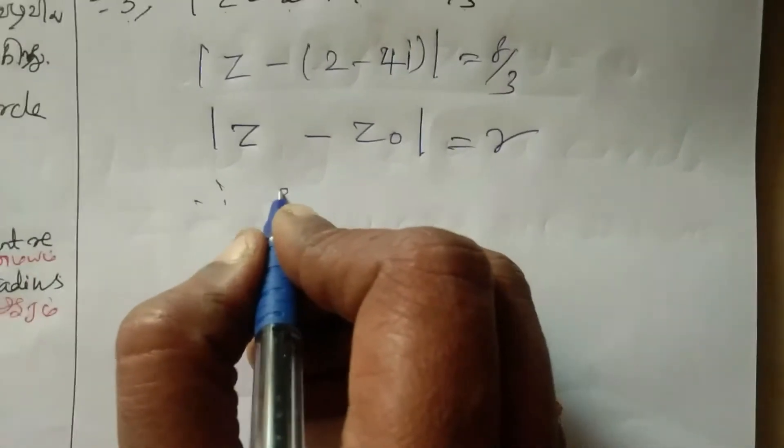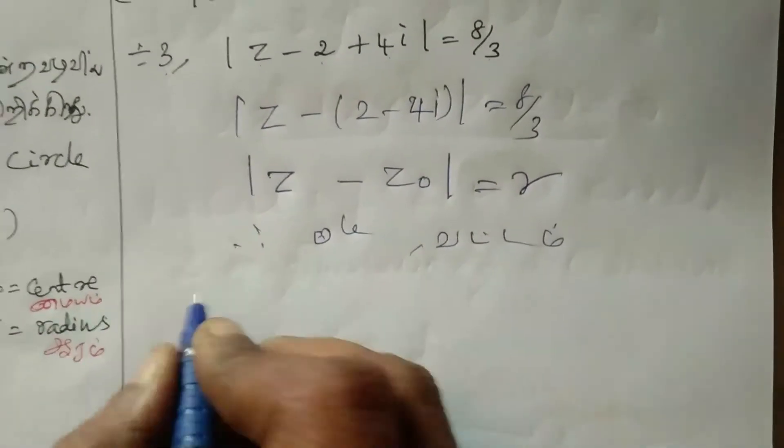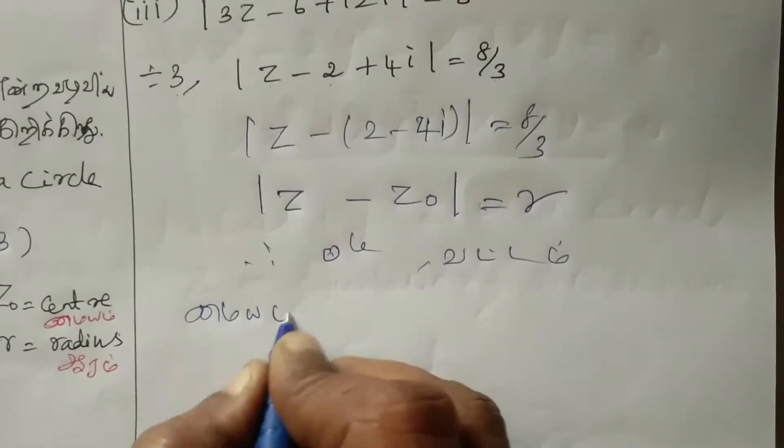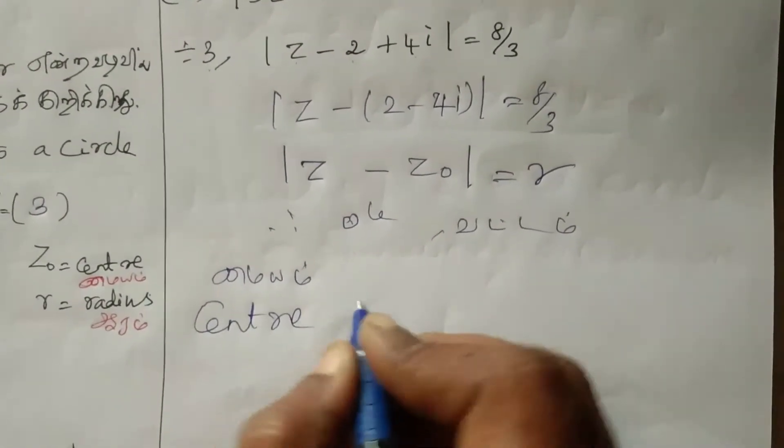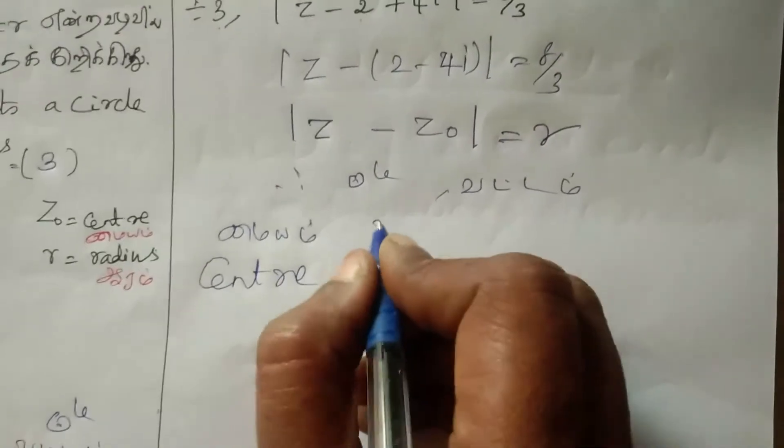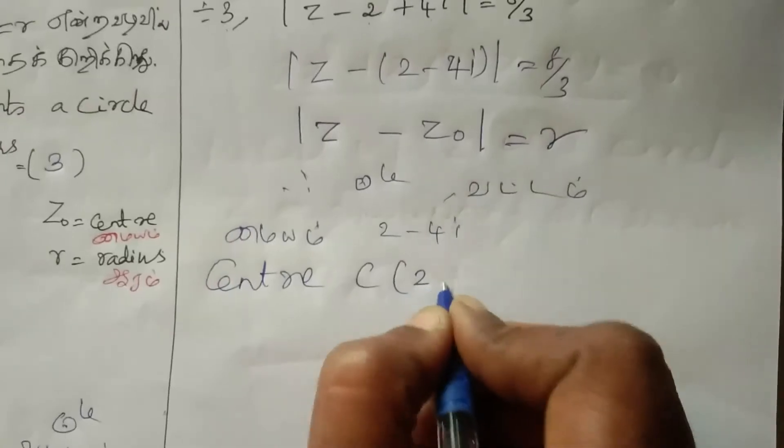So Z not is 2 minus 4I, which is 2, minus 4. Center is 2, minus 4 and radius is 8 by 3.